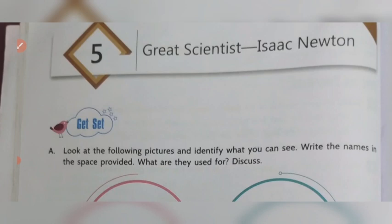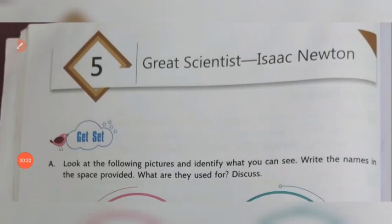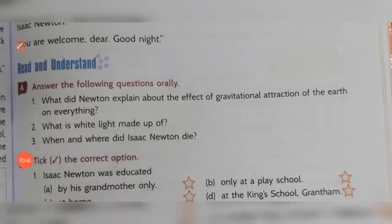We are coming to the exercises. Let's move to the exercises. We are going to discuss the exercises of chapter number 5 — 'Great Scientist Isaac Newton' — from your Roots and Wings. Move to page number 65 of your Roots and Wings. Read and Understand.